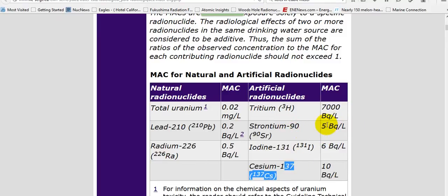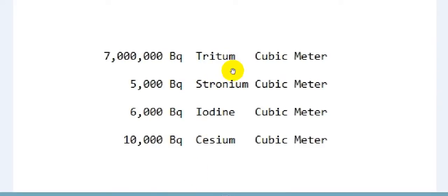Strontium is 5 becquerels per liter. When I convert that over to cubic meters, which is the size of your bathtub you put your children in, it's 5,000 becquerels of strontium being soaked into your skin.